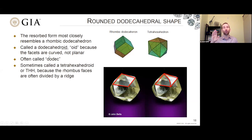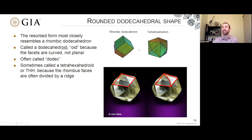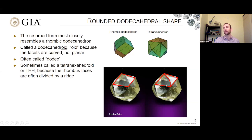Sometimes these are just called 'dodecs' for short. You'll sometimes also hear the term tetrahexahedroid, a more complicated shape where the rhombus faces are divided down the middle to make little triangles. When you look at some of these dodecs, they have a medial line dividing them in half, and they can be better described as tetrahexahedroids. That's a bit of a mouthful, so sometimes people just call all of these dodecs. The important thing is that they've been resorbed into this shape.